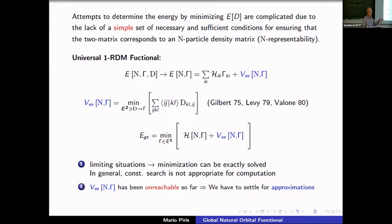These matrices satisfy many properties: they are Hermitian, have non-negative diagonal elements. If you contract the two-particle matrix once more, you obtain the one-particle matrix. In general, the energy is an exact functional of the two-particle density matrix. We can try to minimize the energy with respect to the two-particle matrix, but this is complicated due to the lack of simple necessary and sufficient N-representability conditions.